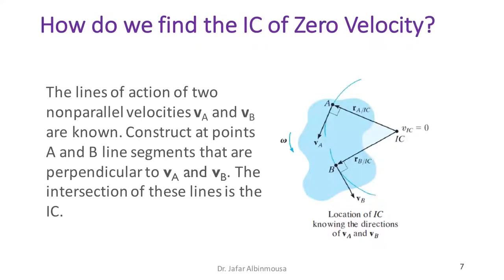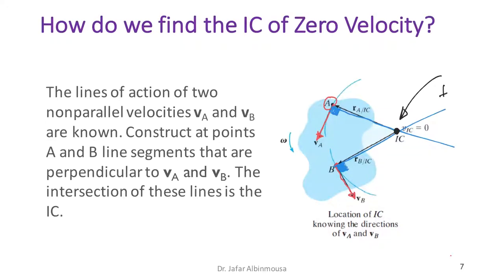In the second method, if we know the directions and magnitudes of two velocities at points A and B on the body, we draw perpendicular lines to each velocity vector. The intersection of these two perpendicular lines is the IC.